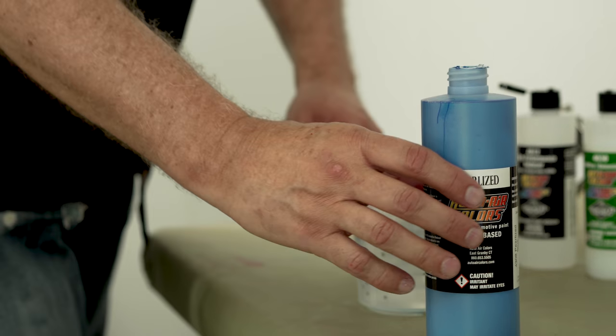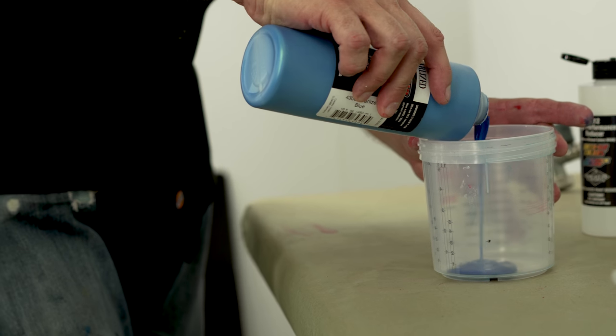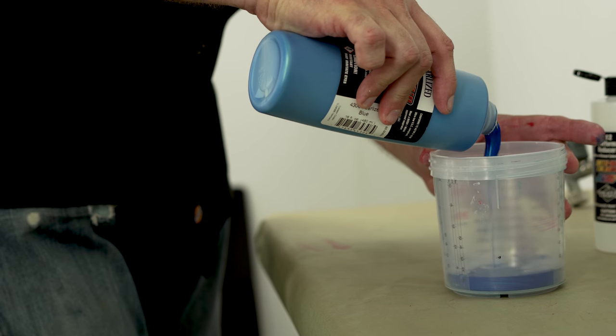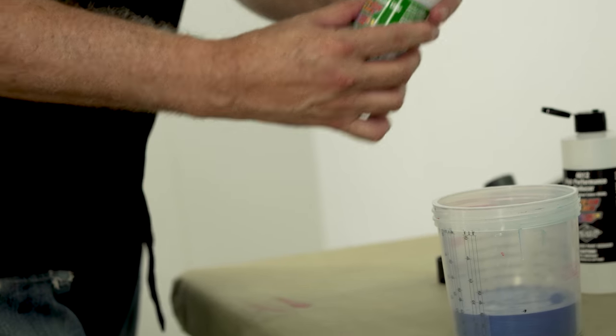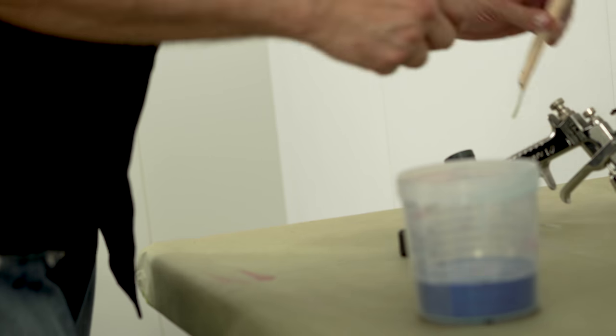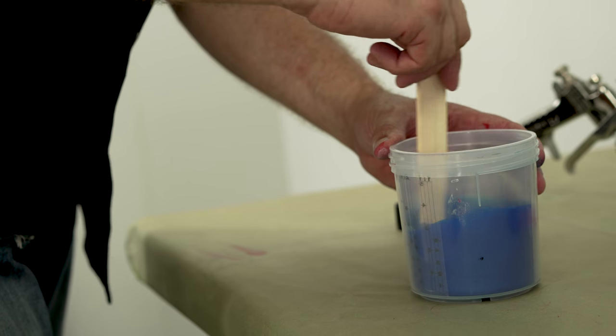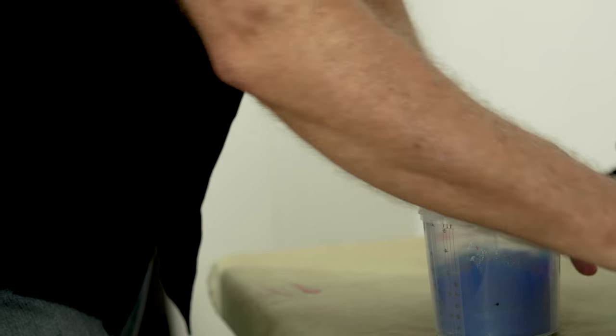Now I'm going to mix up some pearlized blue Auto Air Colors. Mix in 10 to 25 percent of the 4030, then 5 to 10 percent of the 4012 reducer. Mix thoroughly, then set it aside for about 10 minutes.